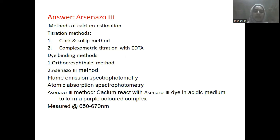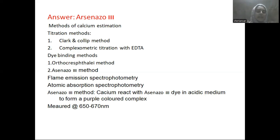The methods of calcium estimation include: titration methods (dye-binding methods), flame emission spectrophotometry, and atomic absorption spectrophotometry. Titration methods include the Clark and Colip method and complexometric titration with EDTA. The colorimetric method is the ortho-cresolphthalein method, and the Arsenazo 3 method. The Arsenazo 3 method is the standard method used in calcium estimation.